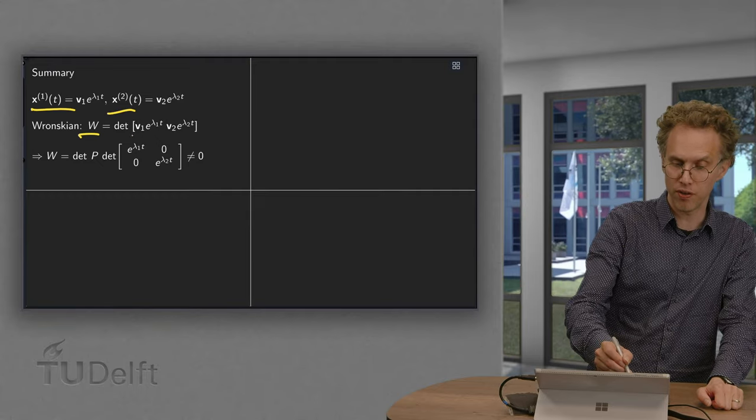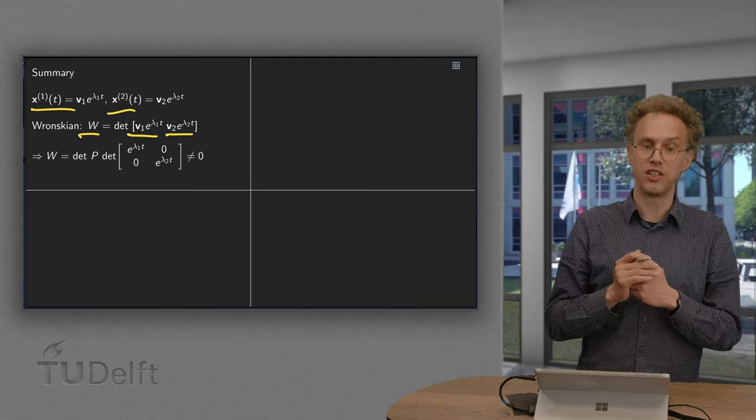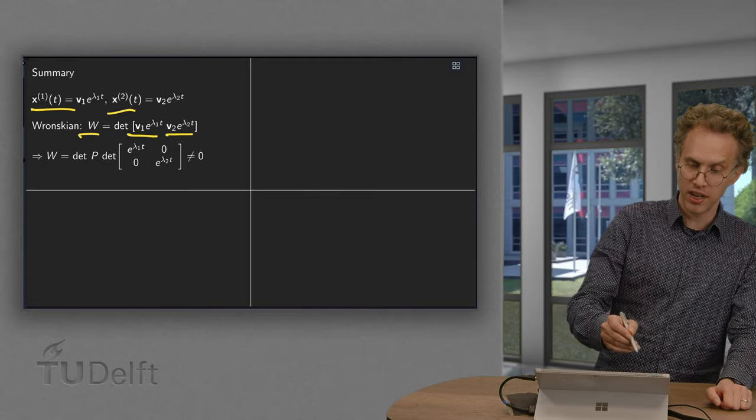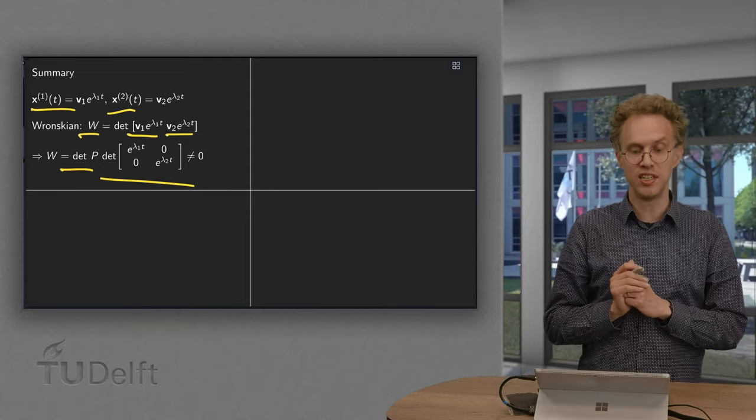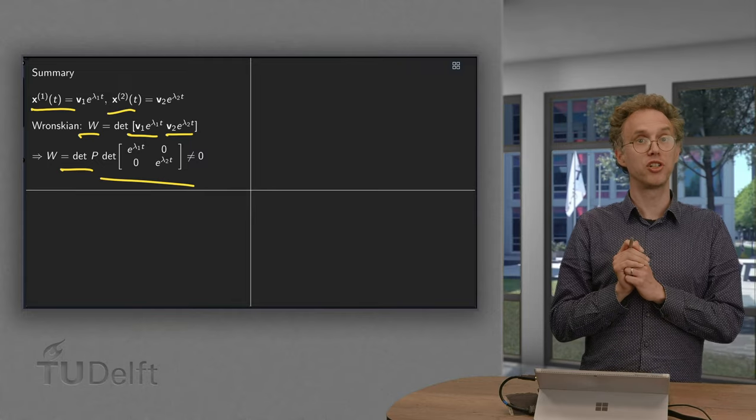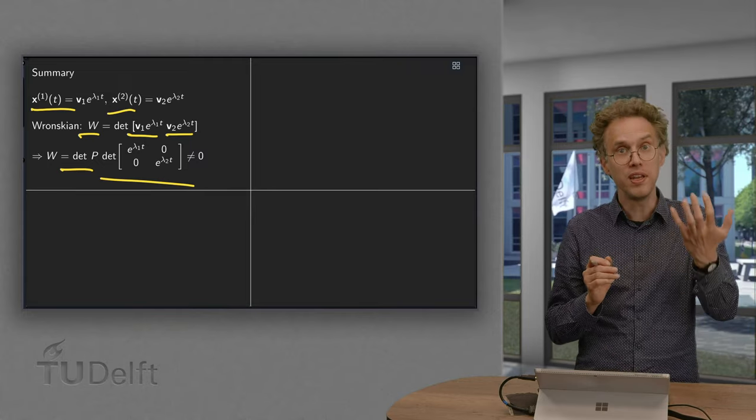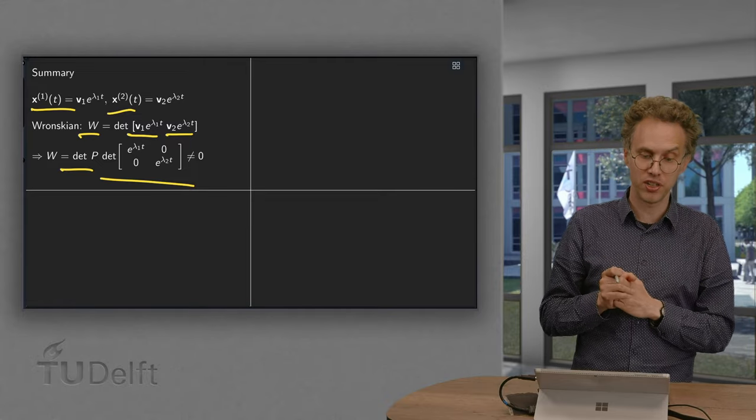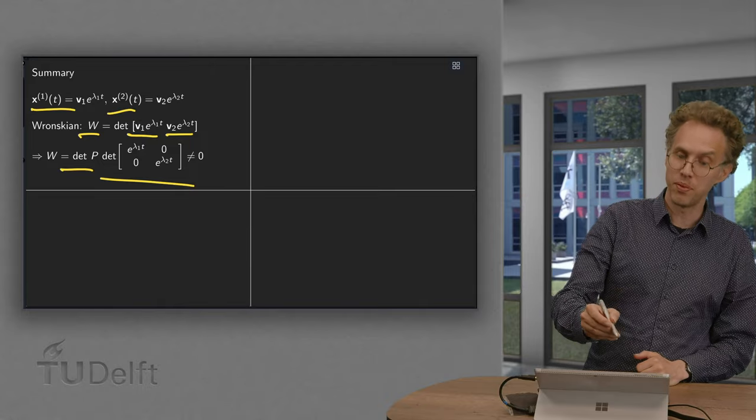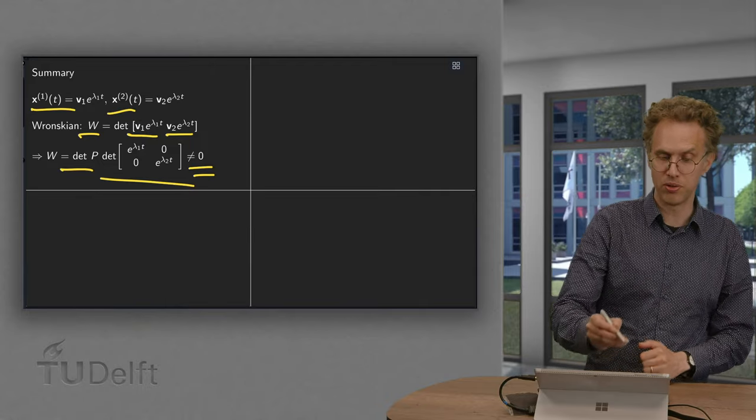The Wronskian is the determinant of x1 and x2. And this Wronskian equals the determinant of p times the determinant of e to the power dt. Well the eigenvalues are non-zero of course. p contains the eigenvector so it's a matrix with non-zero determinant. So that means that the Wronskian is also non-zero.